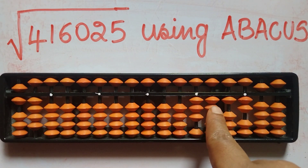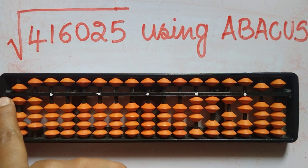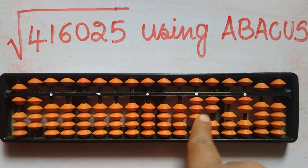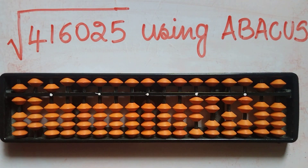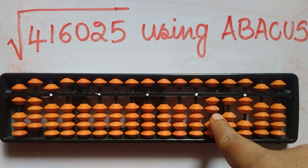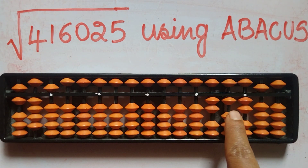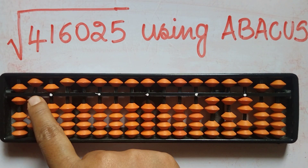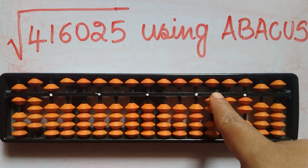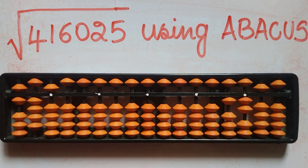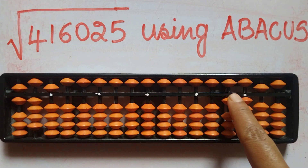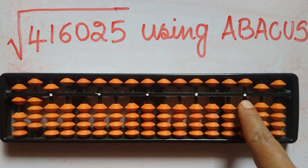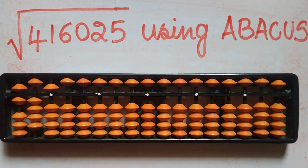Now we have 32. How many times does 6 go into 32? 6 fives are 30, so we take 5. 4 fives are 20 — remove 20. Then 5 squared is 25, and half of 25 is 12.5, so we remove 1, 2, 2.5 — that is 12.5.